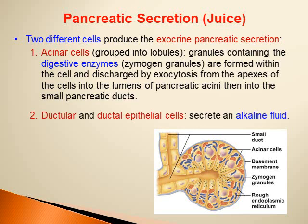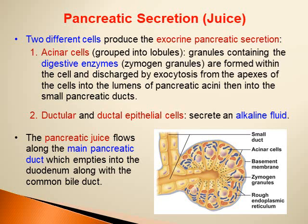The other cells that contribute to pancreatic juice are the ductular and ductal epithelial cells — the cells that line the pancreatic ductules and ducts. These cells mainly secrete an alkaline fluid which is very rich in bicarbonate. The pancreatic juice flows along the main pancreatic duct which empties into the duodenum along with the common bile duct.